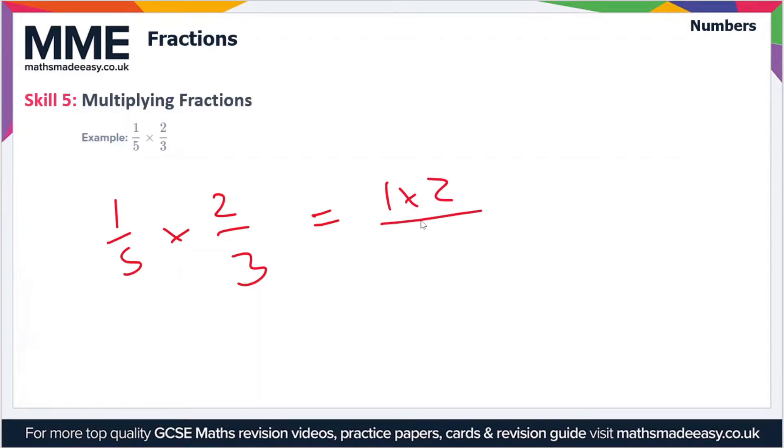In this case we've got one times two over five times three, which simplifies to two over fifteen. This is already in its simplest form because there are no common factors of two and fifteen, so we can't simplify this any further.